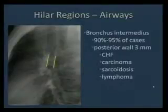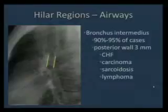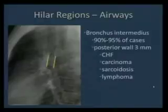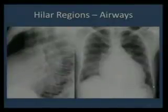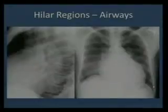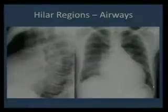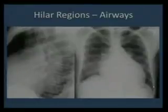Regarding the bronchi, two rounded lucencies project over the hilar region. The upper rounded lucency represents the right upper lobe bronchus, seen in approximately 50% of cases. The lower rounded lucency represents the left main bronchus, seen in about 80% of cases. Between them is a tubular structure — the projection of the bronchus intermedius — whose posterior wall measures approximately 3 mm. Any thickening indicates pathology. Here is an example of a patient with CHF showing cardiomegaly, hilar congestion, and a thicker posterior wall of the bronchus intermedius representing pulmonary edema.